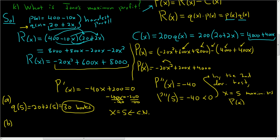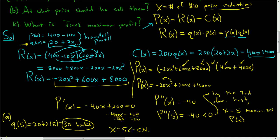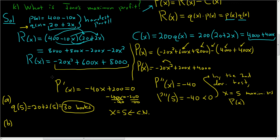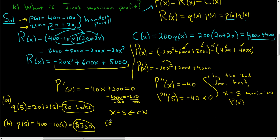Part B is asking at what price should he sell them, so we'll use the price function. Little p of 5 is equal to 400 minus 10 times 5, which is 400 minus 50, so $350. That's the price he should sell the books at to maximize profit.